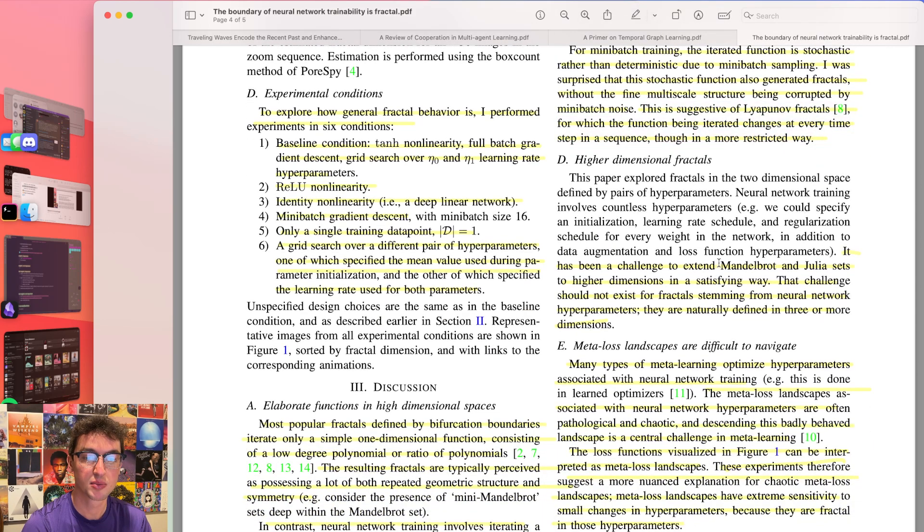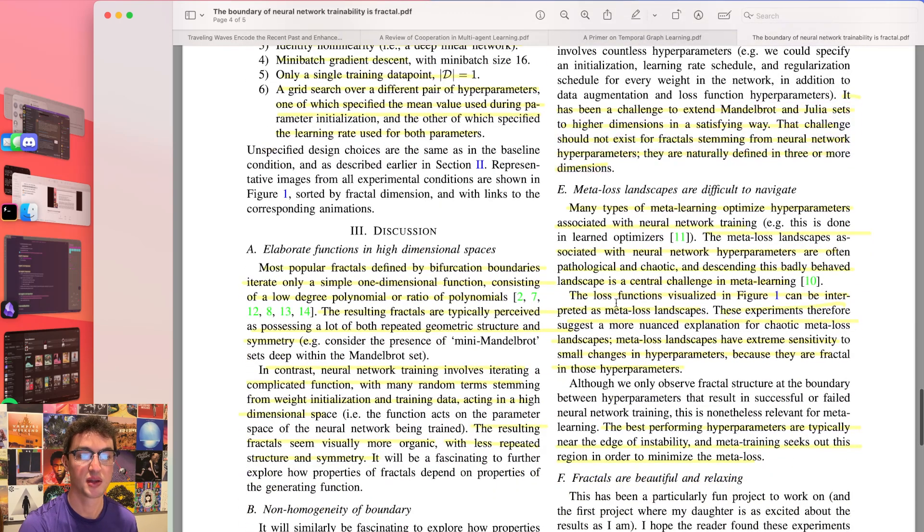There's been a challenge to extend Mandelbrot and Julia sets to higher dimensions in a satisfying way. That challenge should not exist for fractals stemming from neural network hyperparameters. They are naturally defined in three or more dimensions. Many types of meta-learning optimize hyperparameters associated with neural network training. The meta-loss landscapes associated with neural network hyperparameters are often pathological and chaotic, and descending this badly behaved landscape is a central challenge in meta-learning. The loss function visualized in figure one can be interpreted as a meta-loss landscape.